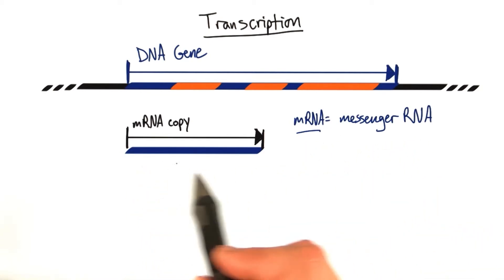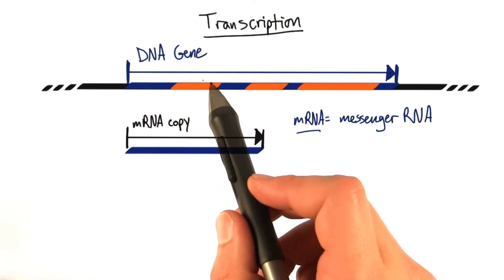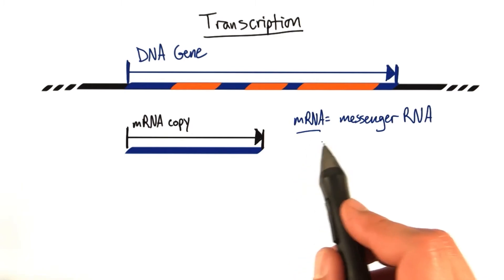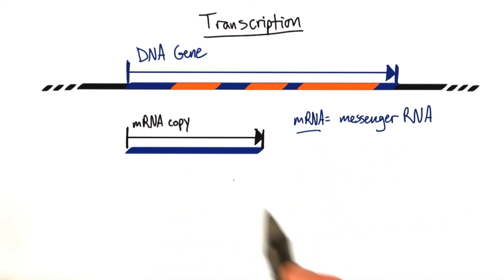Because the messenger means that it was a copy made from a DNA gene, and that's eventually going to be turned into protein. We call this our mRNA or our messenger RNA copy.